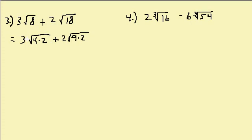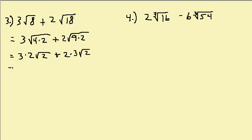The square root of 4 is 2, so that's 3 times 2, and this 2 here stays under the radical because it's not a perfect square. You can watch my videos on simplifying radicals if you don't understand how to simplify. Plus 2, and then the square root of 9 is 3, so times 3, and this 2 stays under the radical. So this is equal to 6 square root of 2 plus 6 square root of 2, and now the radicals are the same, so 6 plus 6 is 12 square root of 2.